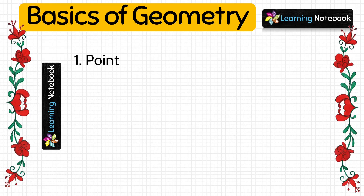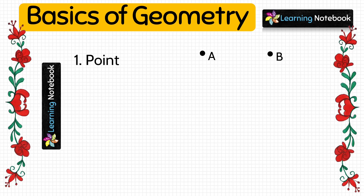The first term is 'point'. A point is the basic unit of geometry. Let's take two black bindis and paste them, then write A and B against them. So these are two points and we read them as point A and point B.